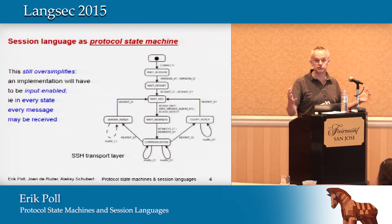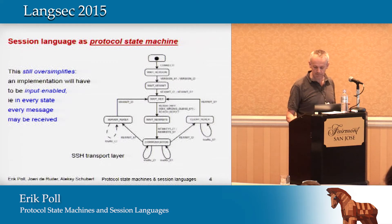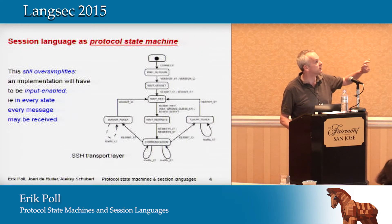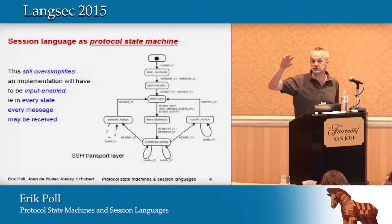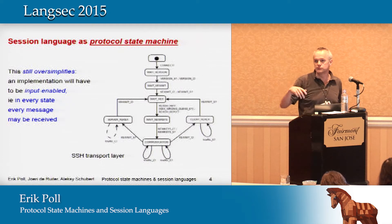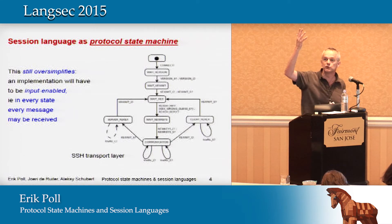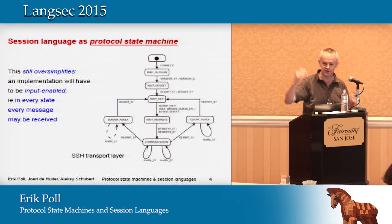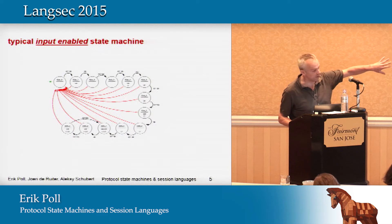If you implement the protocol, you will have to handle arbitrary sequences of messages, including incorrect ones. Typically you will have to give a state machine which is input-enabled, meaning that in every state you have to be able to accept any message. The bulk of these messages are incorrect and you'll have to abort or reset the protocol, and only the happy ones will get you toward exchanging data.